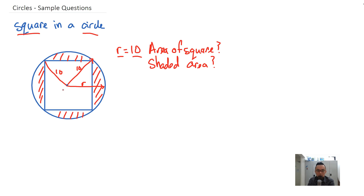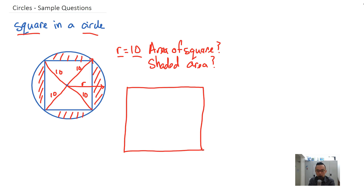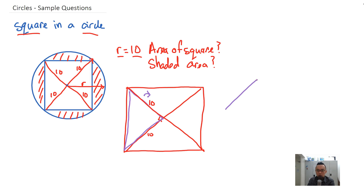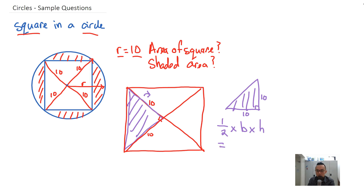This line is also 10, and this line is also 10, and this line is also 10. If we extract the square, it looks something like this — a rough sketch. This is a 90-degree angle, this side is 10, and this side is 10. Looking at just this triangle, if I flip it and extract it, it becomes a right triangle with 90 degrees, base 10, height 10. The area of this triangle is half times base times height, which equals half times 10 times 10, equals 50.